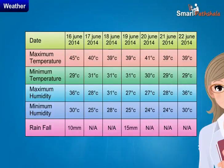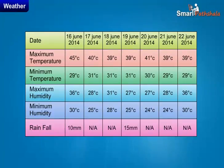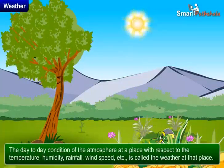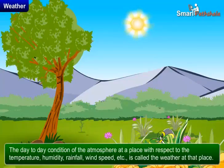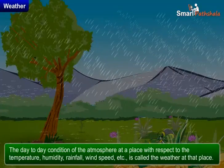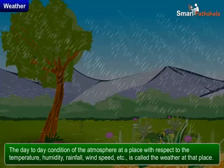Now let us analyze the data updated in the table. The maximum and minimum temperatures recorded may be the same for some days; however, all the parameters cannot be the same on any two days. Over a week, there may be considerable variation. The day-to-day condition of the atmosphere at a place with respect to temperature, humidity, rainfall, wind speed, etc., is called the weather at that place.